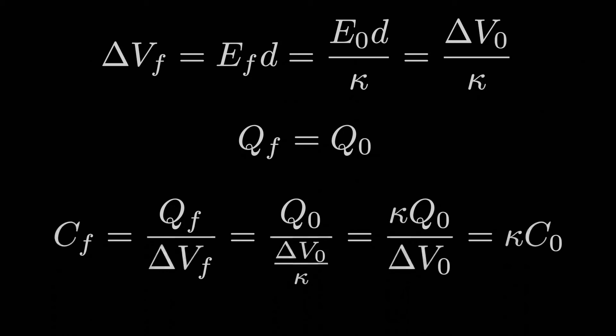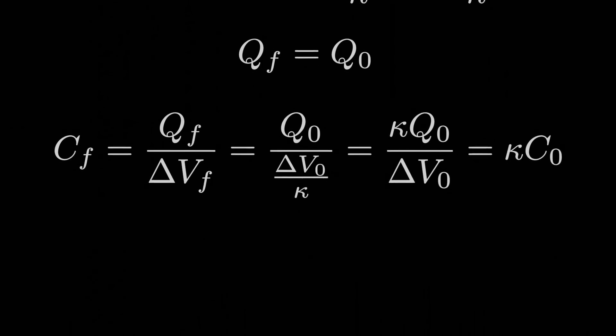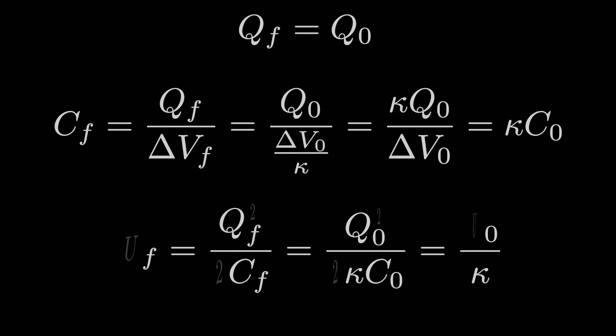The final variable to consider is the electric potential energy. Using Q0 squared over 2C0 as the original potential energy, the new potential energy uses the same charge Q0 squared but divided by 2 times the new capacitance, which is kappa times C0. Therefore, the new electric potential energy is smaller than the original by this dividing factor kappa.